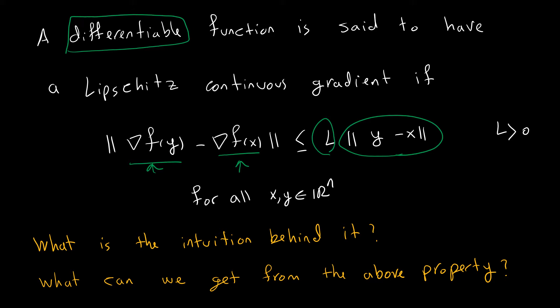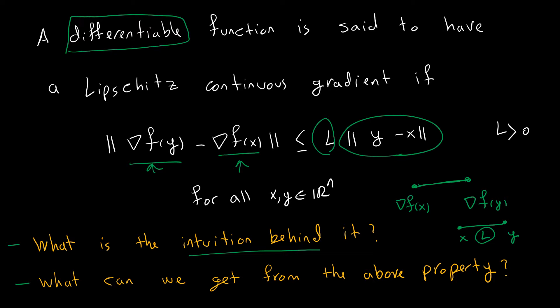Now we need to know the intuition behind this definition. It means that if you take two points in R^n, the distance between the gradients of f at x and f at y is bounded by the distance between x and y multiplied by L. So we can have a close distance between two gradients by taking two points close to each other. That is the intuition behind this definition.